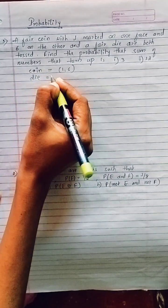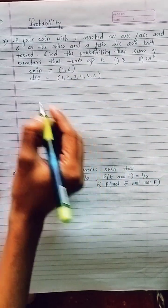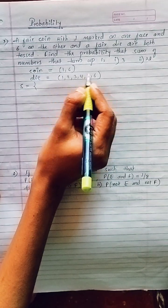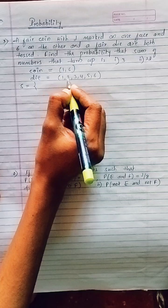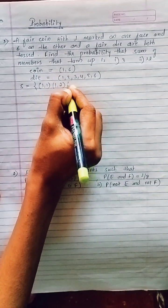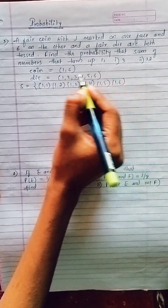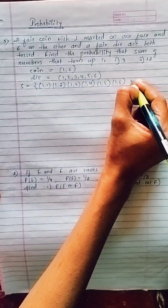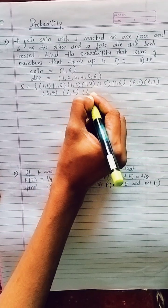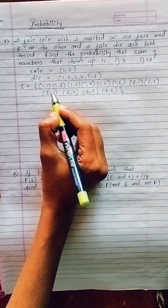When a die is tossed, the possible outcomes are 1, 2, 3, 4, 5, 6. Using these two, we make the sample space by pairing the coin numbers with the die numbers. Starting with 1: (1,1), (1,2), (1,3), (1,4), (1,5), (1,6). Then starting with 6: (6,1), (6,2), (6,3), (6,4), (6,5), (6,6). This is our complete sample space.